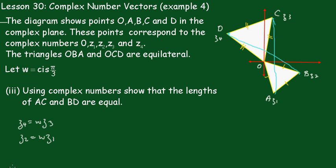Now in part 3, using complex numbers, show the lengths of AC and BD are equal. Now we'll use the parts we've shown before. Z4 equals W times Z3 and Z2 equals W times Z1.